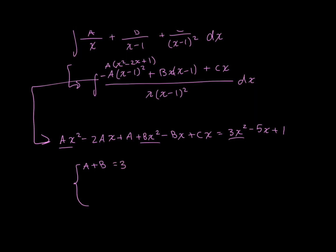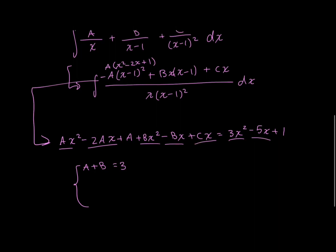And now I'm going to look at whatever has a degree of 1. And I see that negative 2Ax has a degree of 1, as well as that negative Bx, and that's Cx. And on my right-hand side, I have that negative 5x. So writing everything and omitting that x, because it doesn't really matter, plus C is equal to negative 5. I have my second equation.